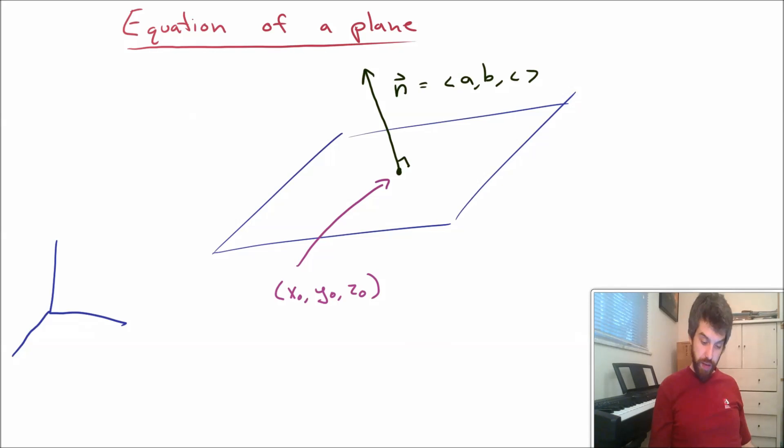Now, how are we going to do this? So I want to think about a generic point that's on the plane. So I've got this base point, but I'm going to come up here and I'm going to fix some other point here. I'm going to call this the point XYZ, where I'm using the generic coordinates XYZ to indicate that I haven't specified them. They're just sort of a random point on the plane.